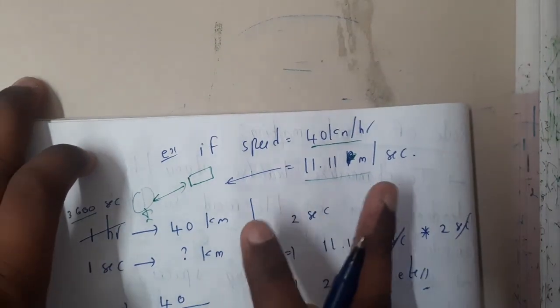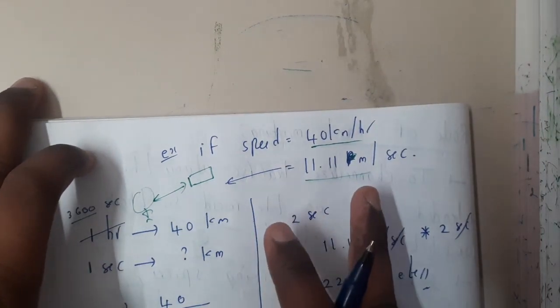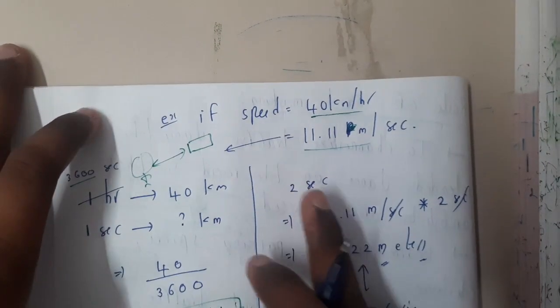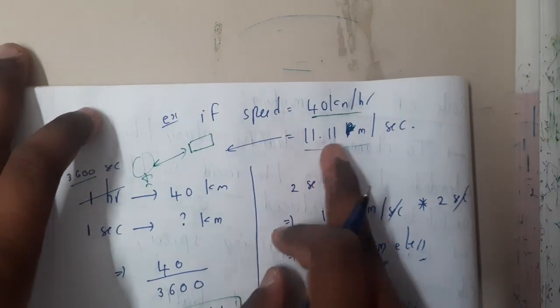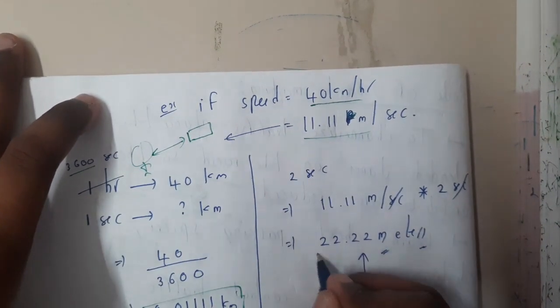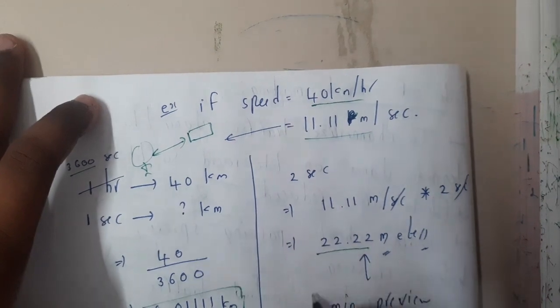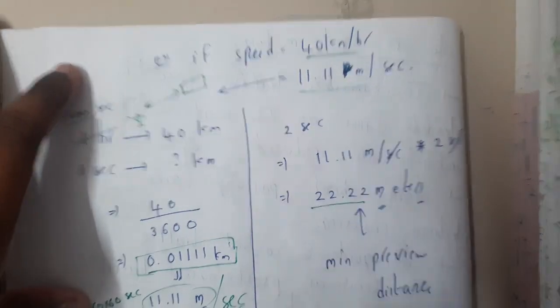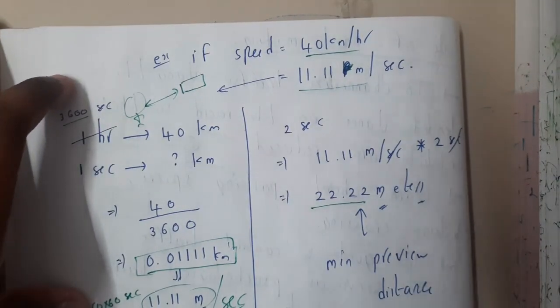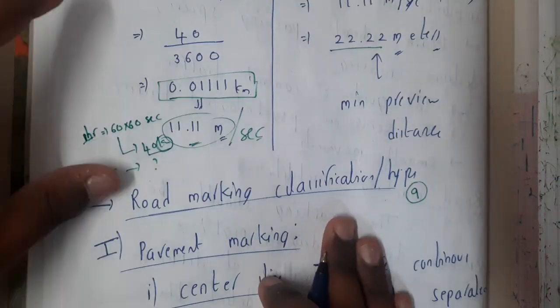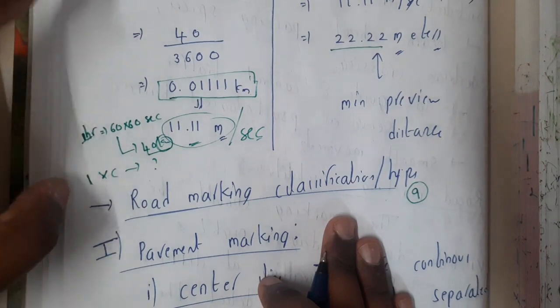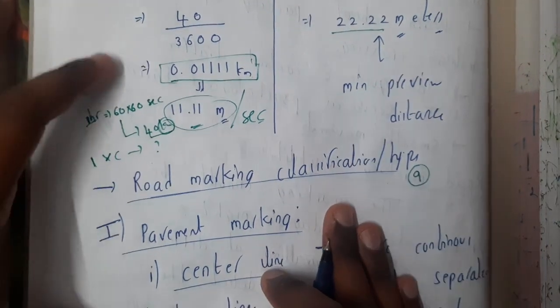Since two seconds is our minimum preview time, we calculate 2 × 11.11 = 22.22 meters. So the minimum preview distance is 22.22 meters.